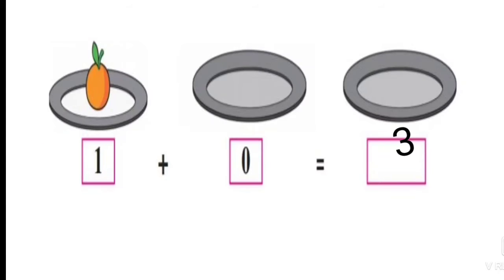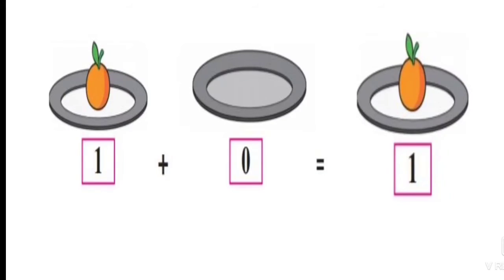How many oranges are there in the first plate? There is one orange. When we add zero oranges, we get one orange. It means we add nothing to one orange, so we get one orange.